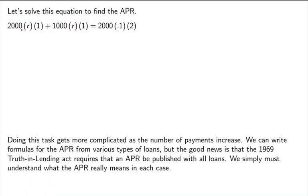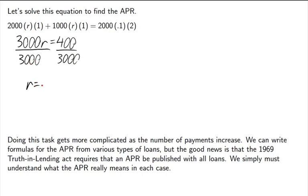Solving the equation: the left side simplifies to 3,000R, and the right side is $400. Dividing both sides by 3,000, we get R equals 0.1333 repeating. Converting to a percent, the APR is 13.33%. So even though we thought we were paying 10%, due to the nature of simple add-on interest, we're actually paying a little more than 10% per year.